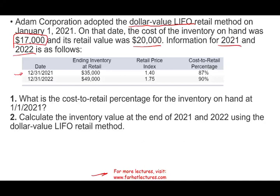They're giving us the ending 2021 retail value, the price index, and the cost-to-retail percentage. For 12-31-2022, they give us the ending inventory at retail — that's important — the retail price index, and the cost-to-retail percentage.